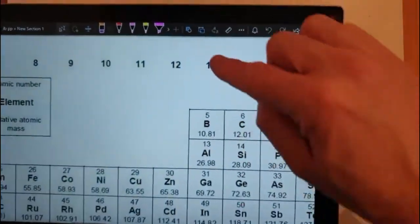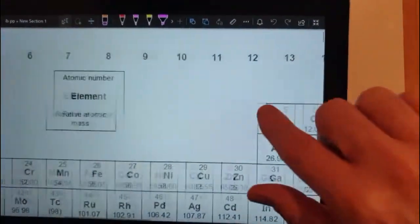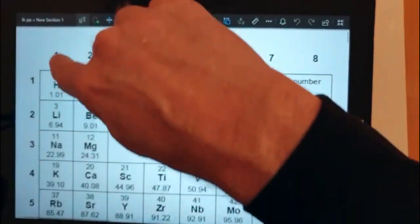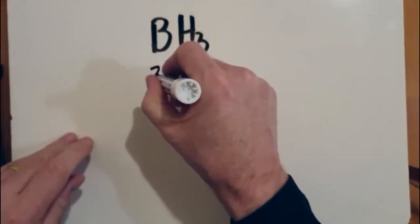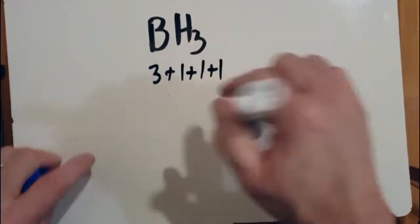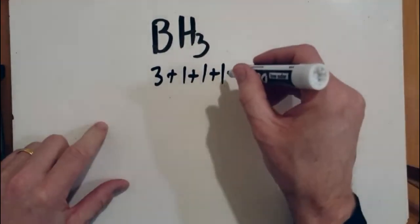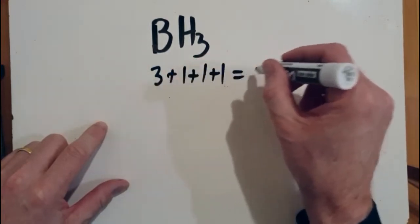So boron is in group 13 with three valence electrons and hydrogen is in group 1 with one valence electron. So that gives me a total of 3 plus 1 plus 1 plus 1, because there's three hydrogens, of six valence electrons.